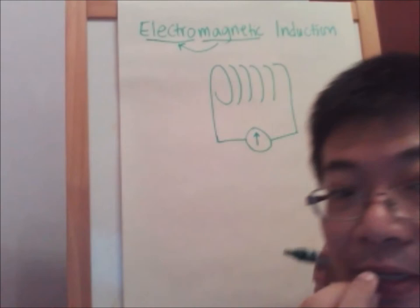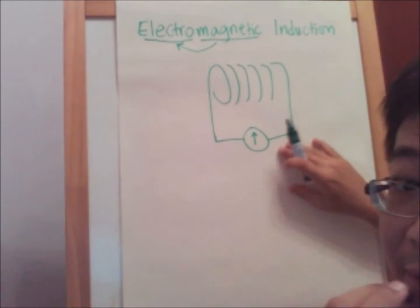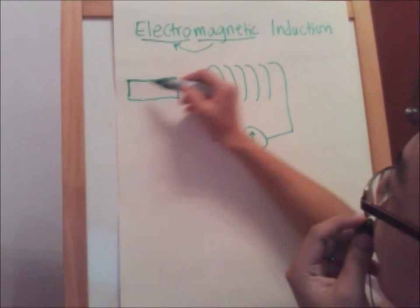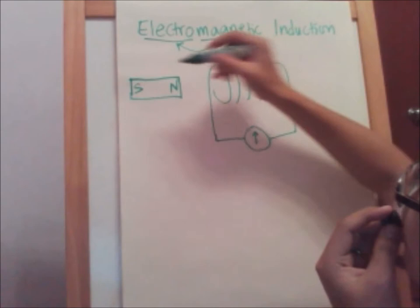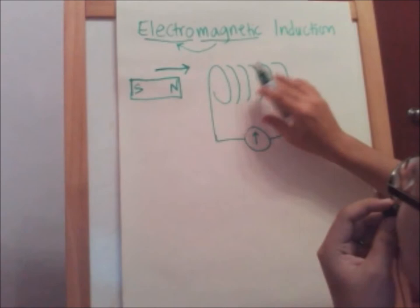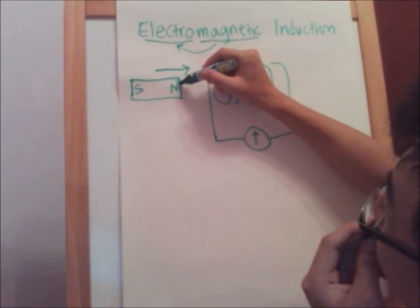By using a change of magnetic flux in the coil, we can actually induce a current. The most typical example would be pushing a magnet near the coil. This is a permanent magnet and this is simply a copper wire coil. As we push the magnet near the coil, there is an effect — what we call electromagnetic induction.